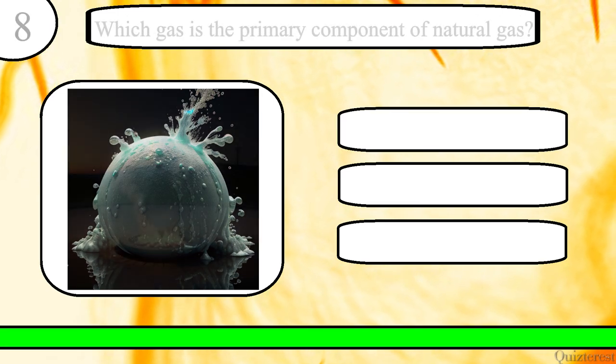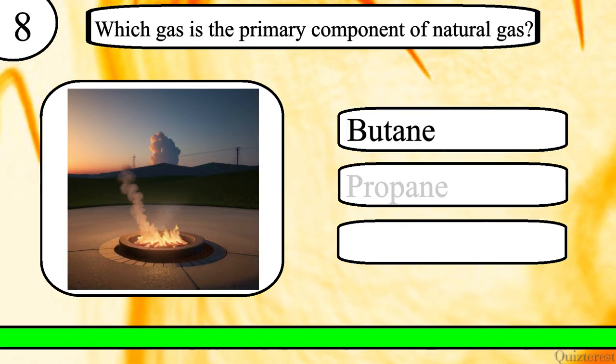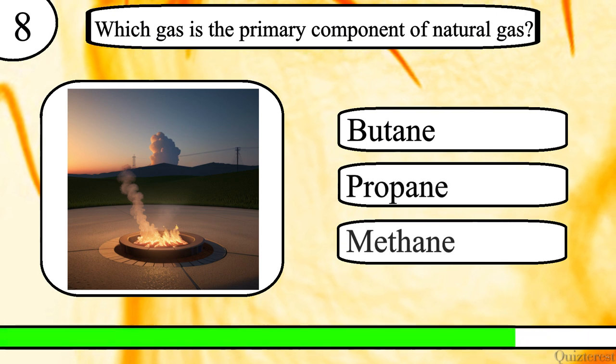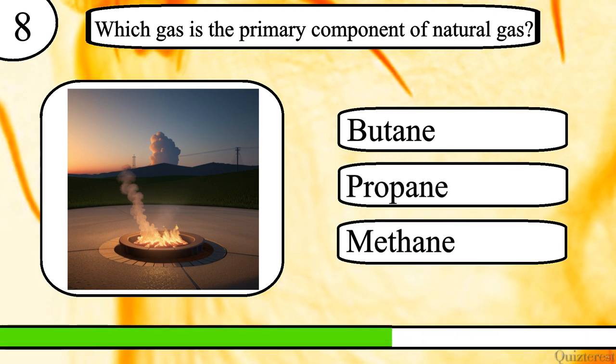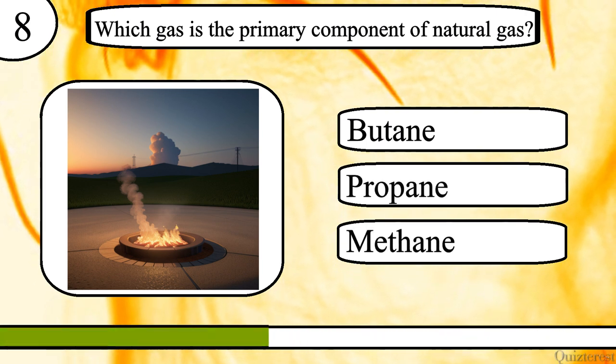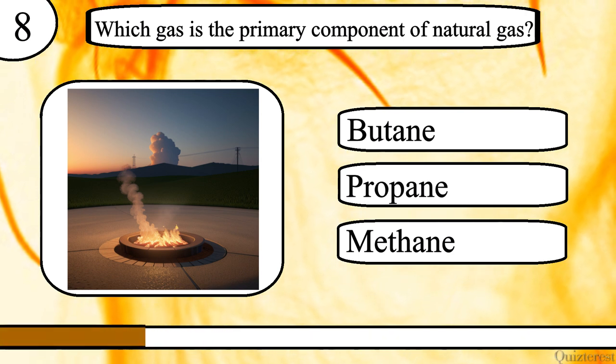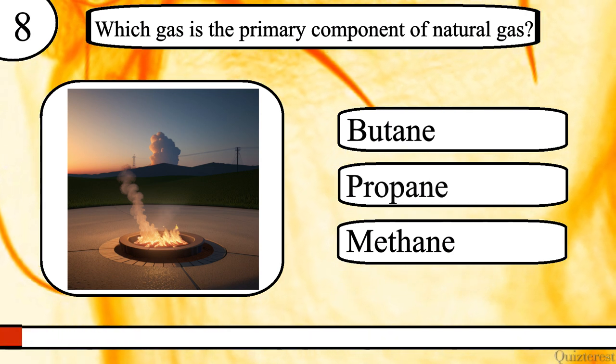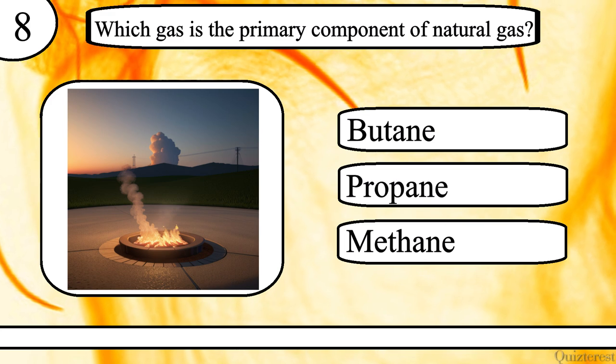Question 8. Which gas is the primary component of natural gas? Butane, propane, or methane? The correct answer is methane.